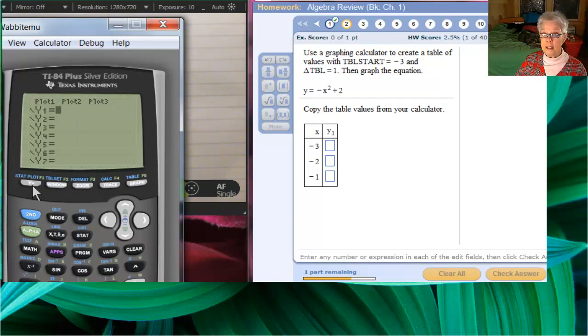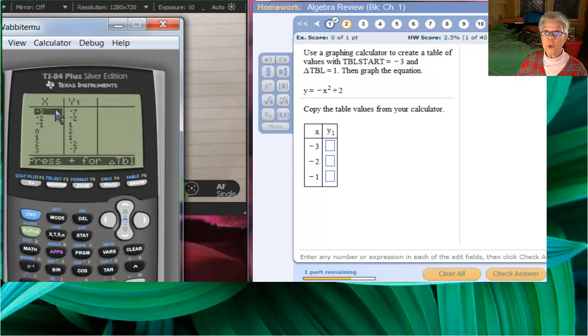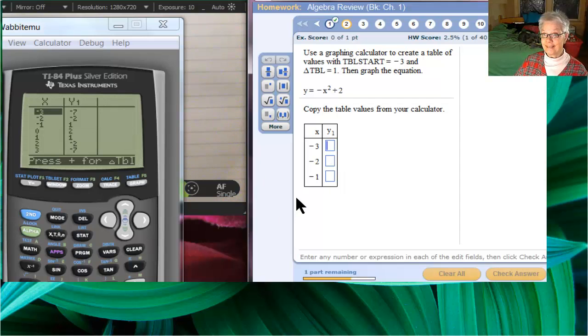Now, I go back to y equals and I enter negative x squared plus two. I can graph it if I want to. It's not really necessary for what we're doing right now, but that's what it looks like. What I want is points. So, I'm going to get second graph while my cat cries. She wants attention, but you're getting my attention.